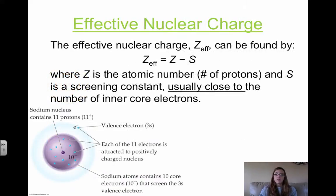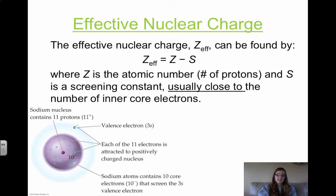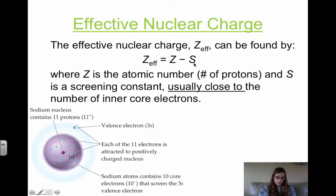The effective nuclear charge is the net positive charge felt by an electron in an atom. The effective nuclear charge is represented as Z-effective, and it can be found by this formula: Z-effective is equal to the nuclear charge minus the screening constant. This formula takes into account the core electrons, which shield some of the nuclear charge.